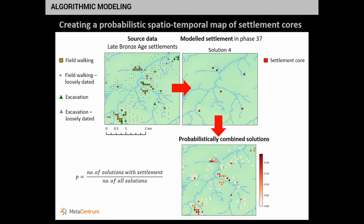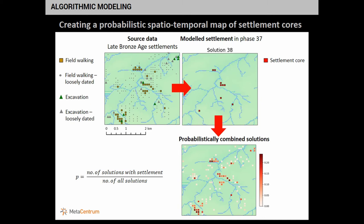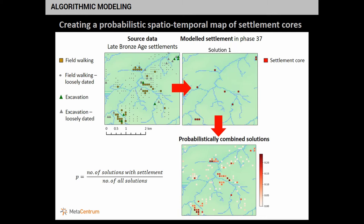Using this approach and thanks to Metacentrum, we are able to calculate this model for the whole area and create a sufficient number of solutions for the phasing. You can see the different solutions for just one phase cycling. Of course, we do not know the sequence in which those phases were happening, but we know the number of phases and can explore this solution space in a probabilistic way. Here you see the expression of these many scenarios in one probabilistic distribution map.